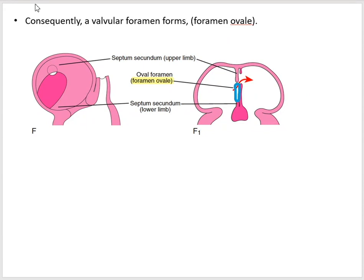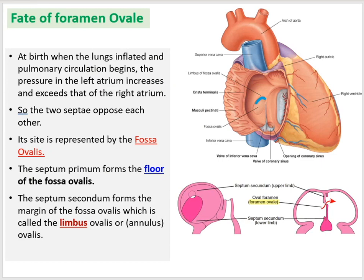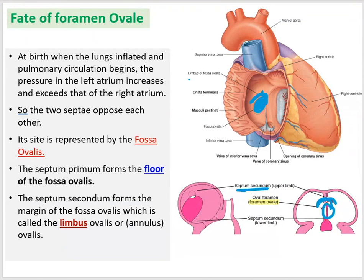This area forms the fossa ovalis. The floor of the fossa ovalis is formed by the septum primum, while the edge of the foramen is formed by the septum secundum, known as the limbus of the fossa ovalis.